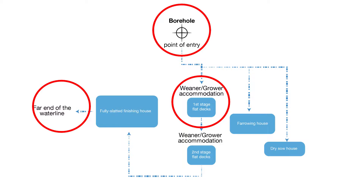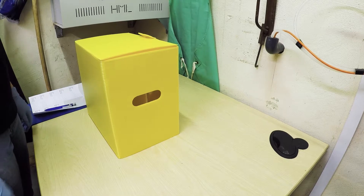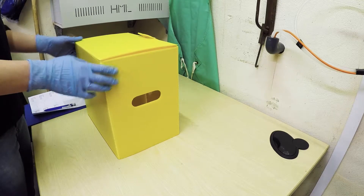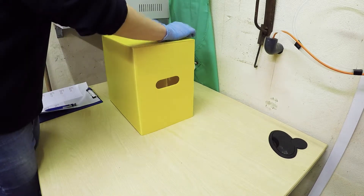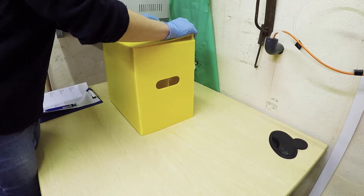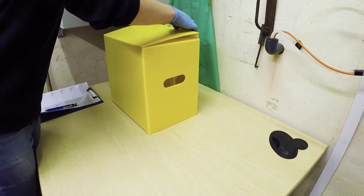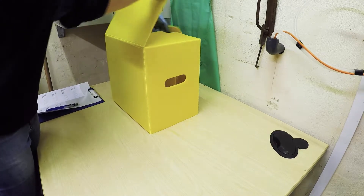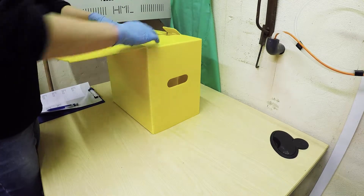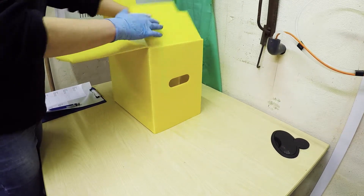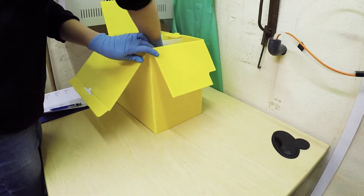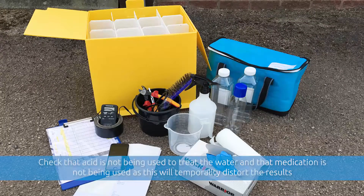The next step is to contact the testing laboratory to arrange for the bottles to be delivered. It is recommended that three samples are taken at each point and that you also consult your veterinary surgeon or advisor before sampling, so they can interpret the results with you.